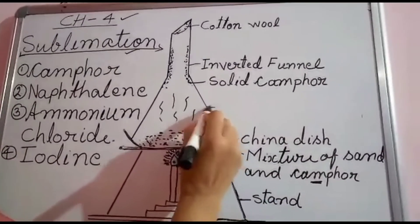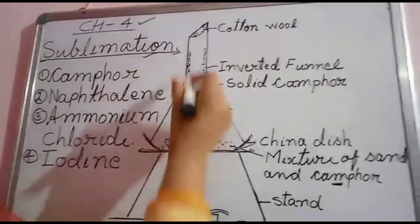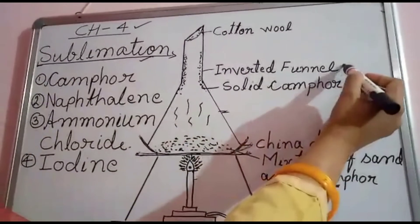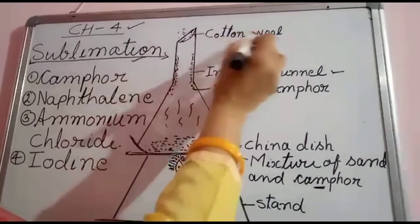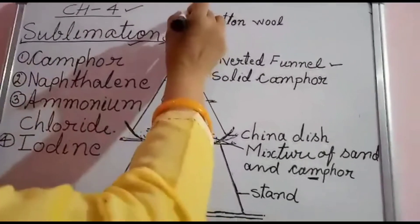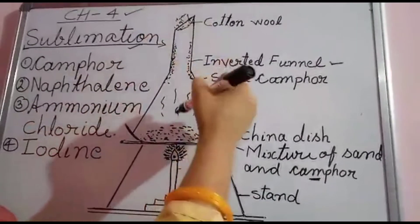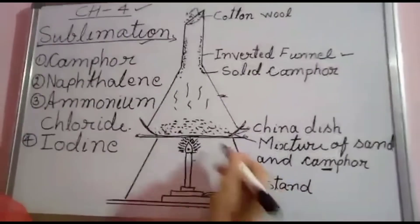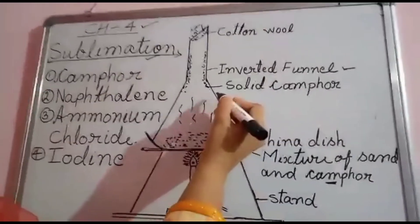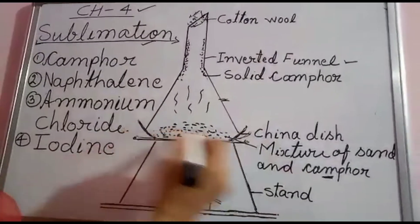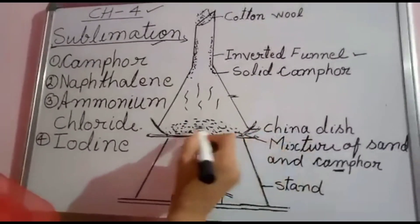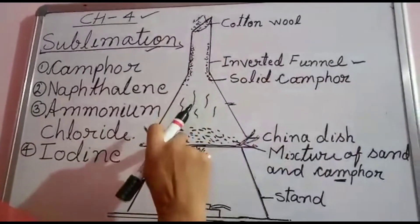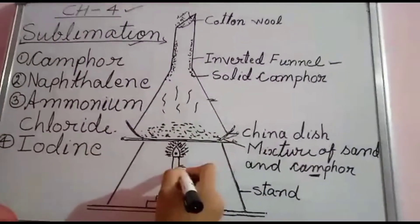Over the mixture we place an inverted funnel. Cotton wool is kept over the mouth of the funnel so that the vapor cannot escape out. First, we place the mixture on a china dish, then cover it by inverting the funnel over it. The materials required are: stand, mixture, burner, inverted funnel, and cotton wool.